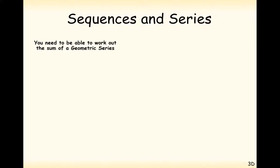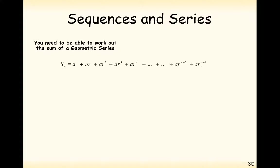Just as with the arithmetic series, we've got to prove a formula to be able to add up all of the numbers in a geometric sequence. The geometric sequence addition is going to look like this: Sn equals a (the first term), add a times r (the second term), add a times r squared (the third term), add a times r cubed (the fourth term), and so on, up to a times r to the power of n minus 2 (the nth term). So this is the summation of the first n terms.